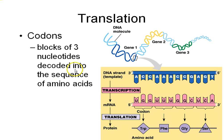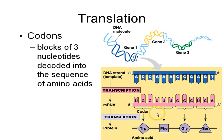A codon is a set of three nucleotides — for example, UGG is a codon. One codon codes for one amino acid. Three RNA nucleotides make one codon. So for three amino acids, you need three codons, or nine nucleotides. Make sure you understand that.